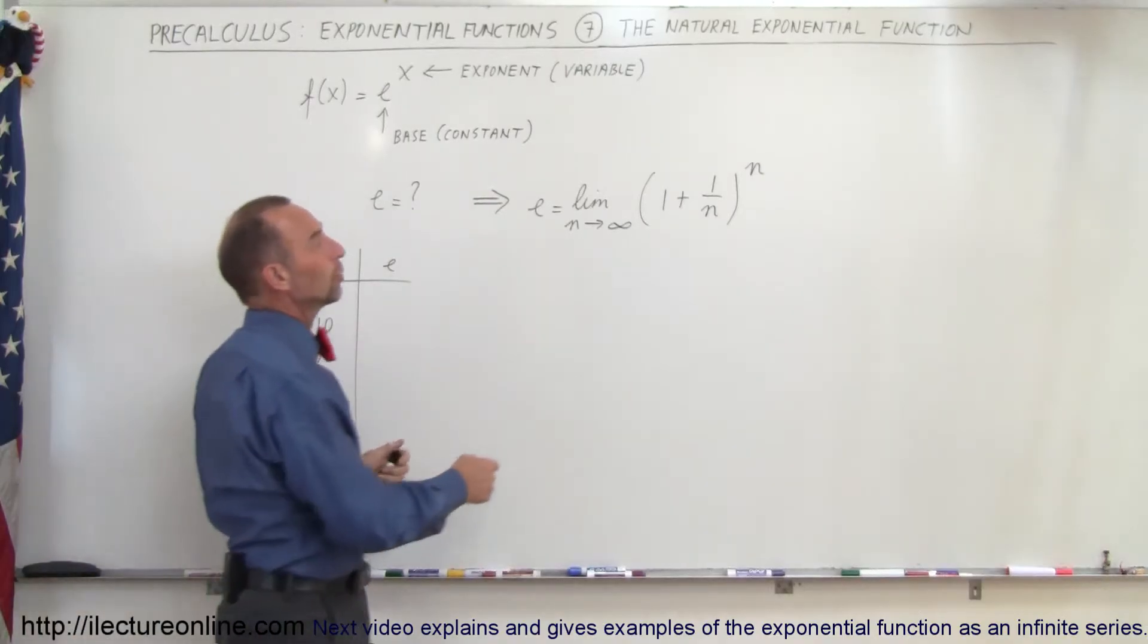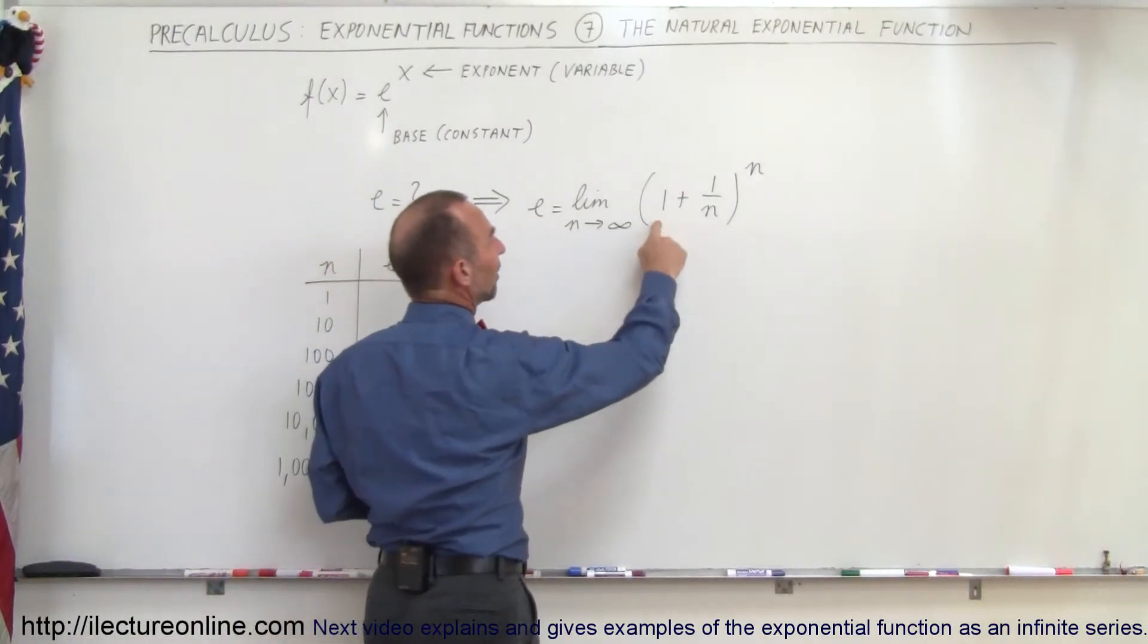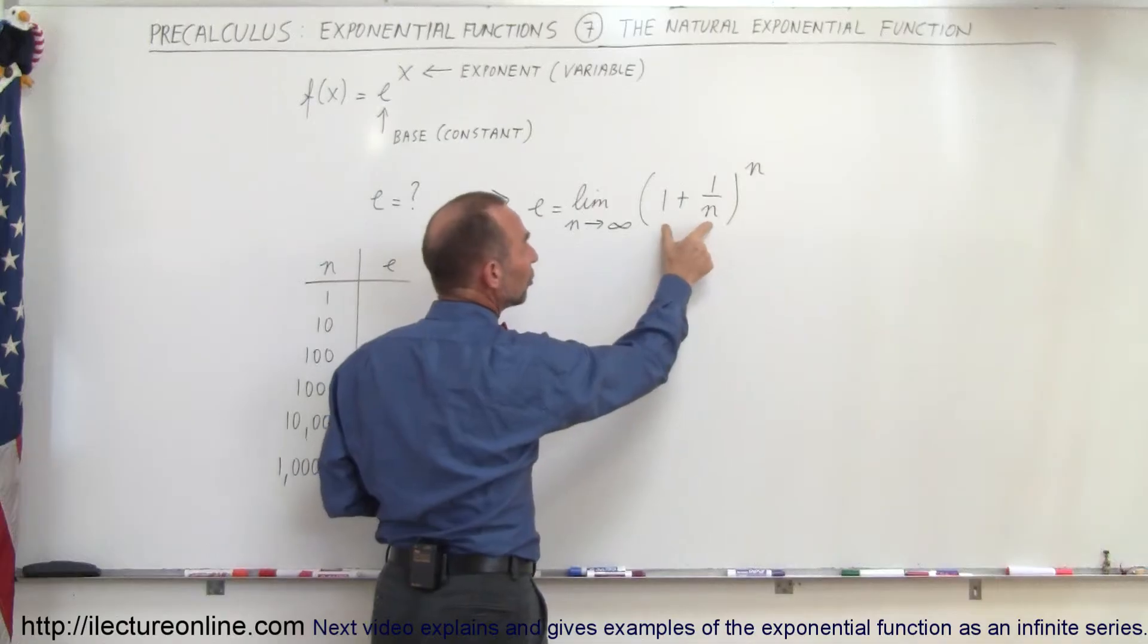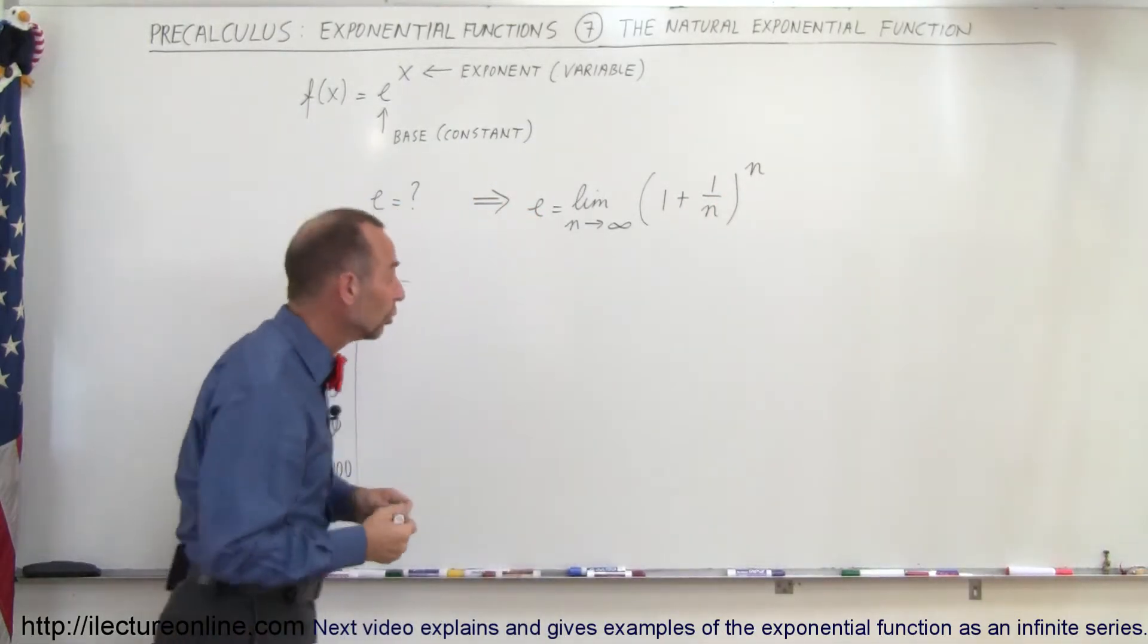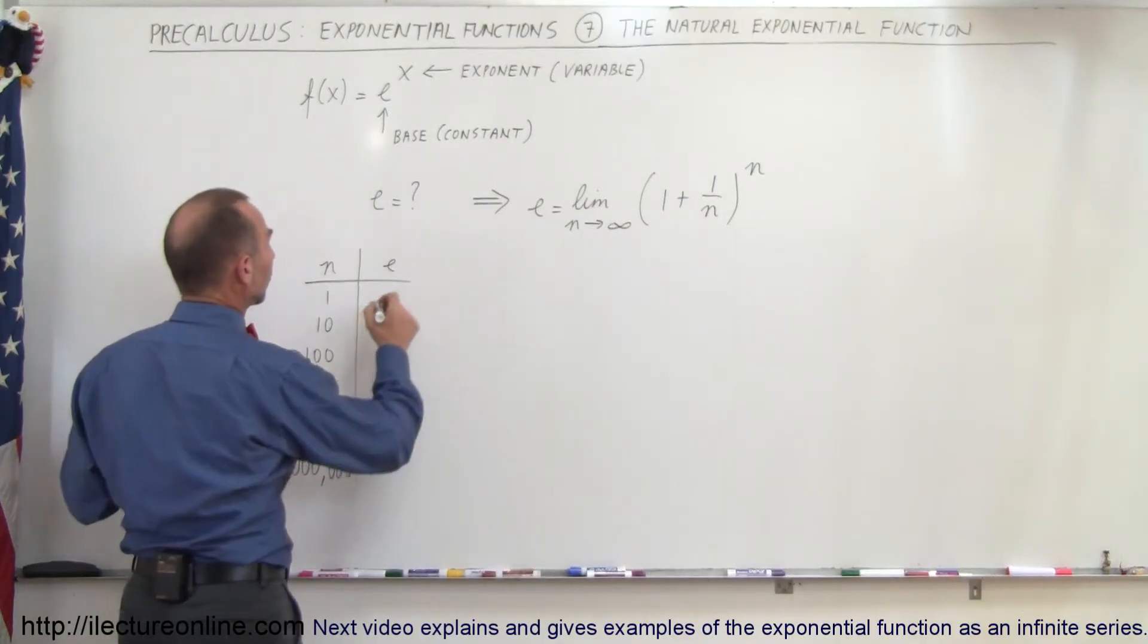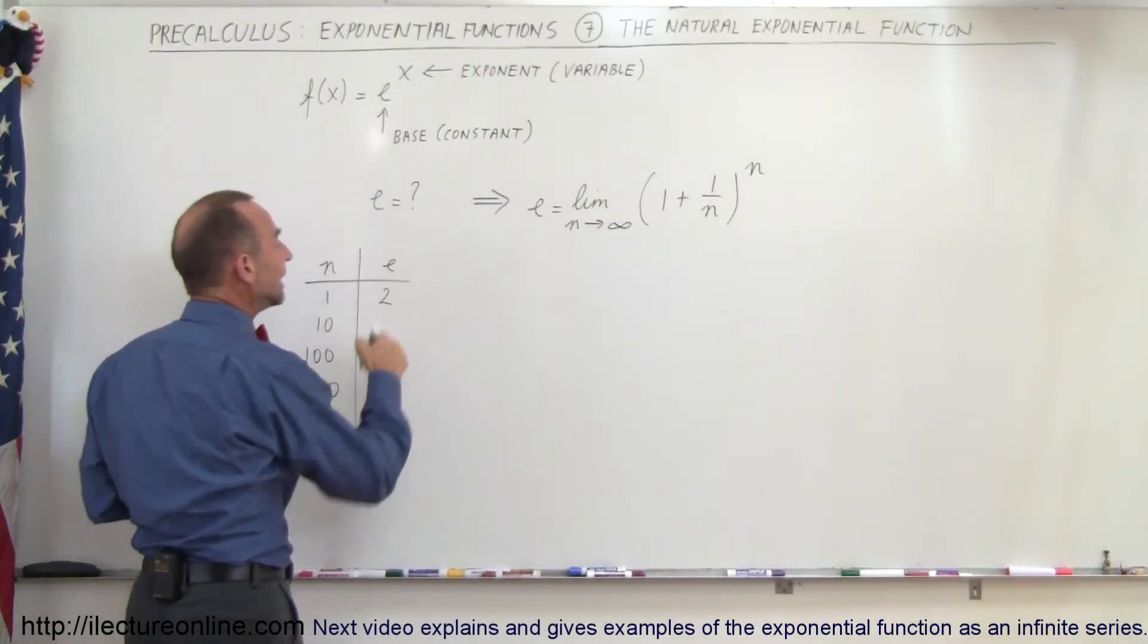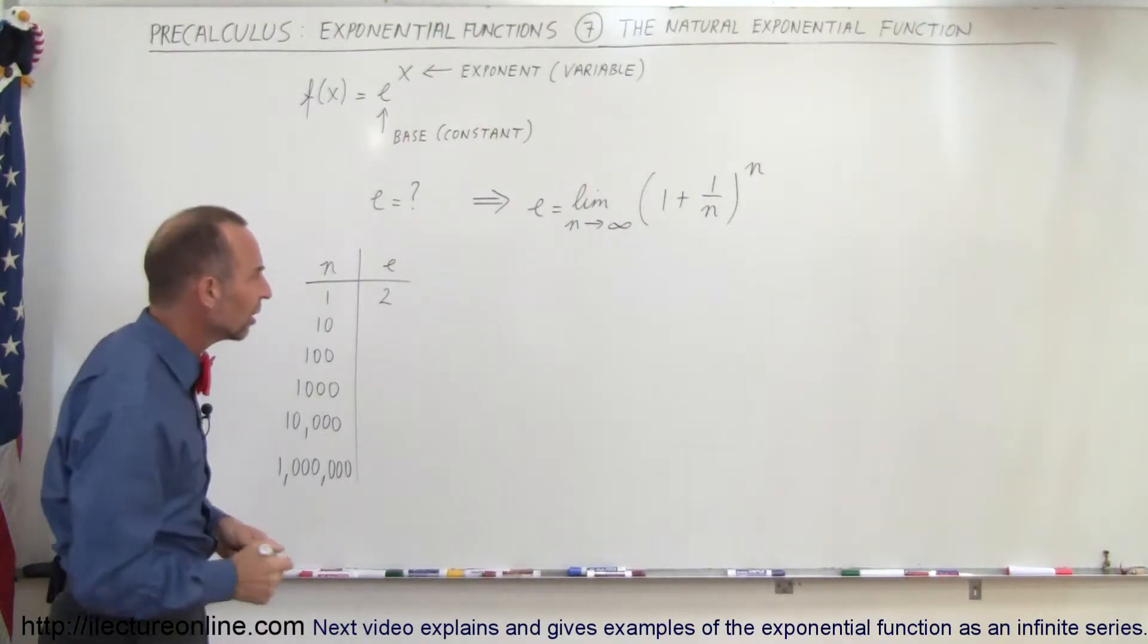So the first thing we're going to do is plug in 1 for n. So we get 1 plus 1 over 1, that would be 2 raised to the 1 power. Well, 2 to the 1 power is equal to 2. So a close approximation is that when n equals 1, e equals 2. So let's continue this.